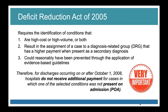The Deficit Reduction Act of 2005 requires identification of conditions that are high-cost or high-volume, or both, that result in the assignment of a case to a diagnosis-related group (DRG). DRGs are important to be aware of as an infection preventionist so you can understand the language spoken around you. For discharges occurring on or after October 1st, 2008, hospitals do not receive additional payment for cases in which one of the selected conditions was not present on admission.